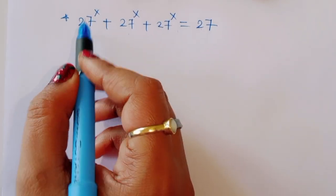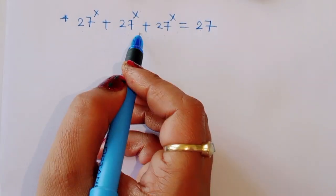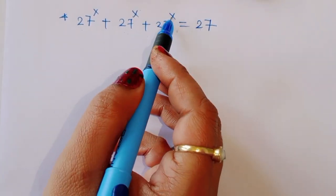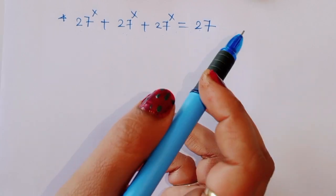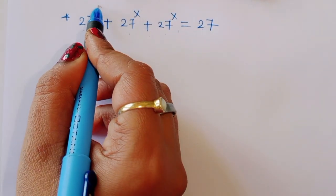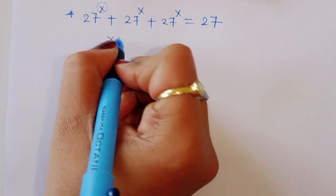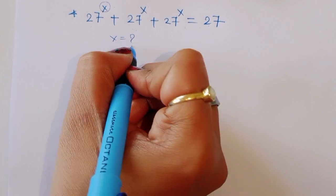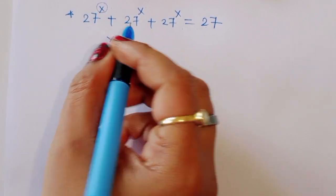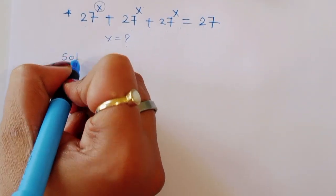The question is: 27 raised to x plus 27 raised to x plus 27 raised to x is equal to 27. We have to find out the value of x. Let's see the solution.